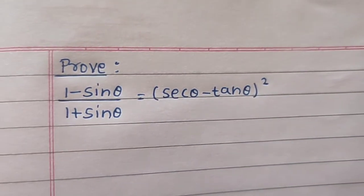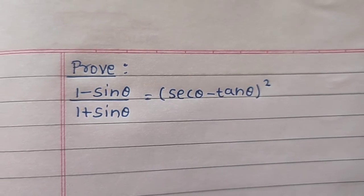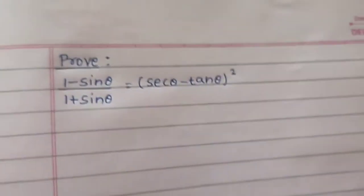We need to prove 1 minus sin theta divided by 1 plus sin theta equals secant theta minus tan theta the whole square.